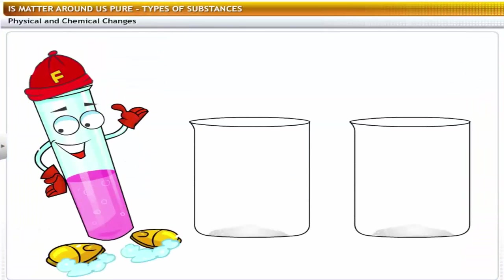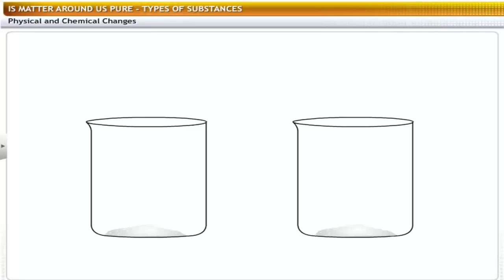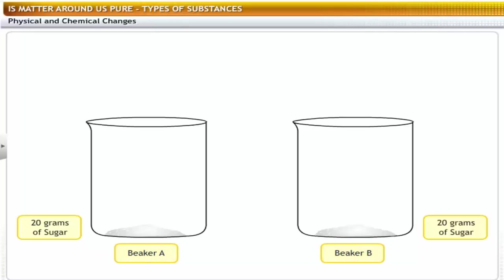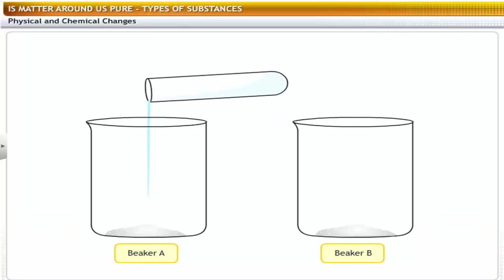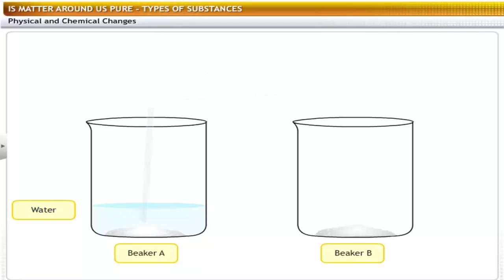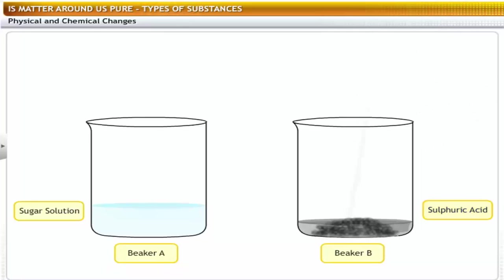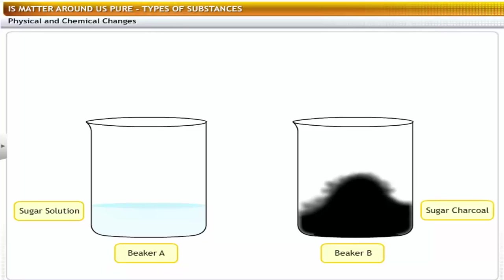Let's do a small experiment. We need to take two beakers with 20 grams of sugar and label them as A and B. Let's add some water to beaker A and stir it. In beaker B, we will add a little sulfuric acid. Observe what happens in beaker A — the sugar gets dissolved in water. In beaker B, sugar reacts with sulfuric acid and black sugar charcoal is formed.